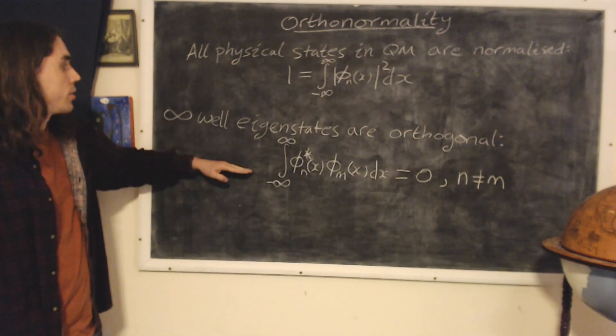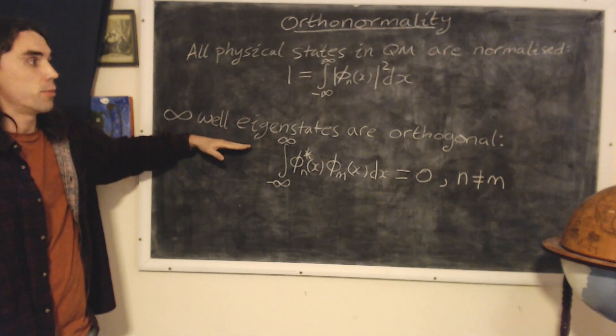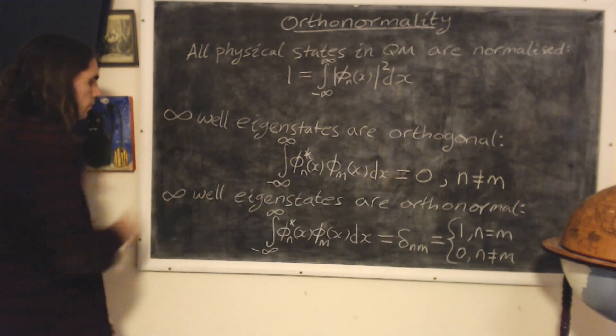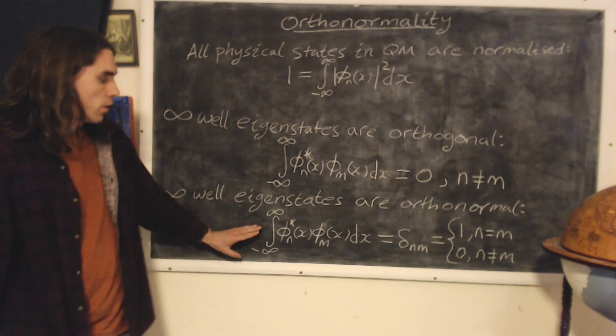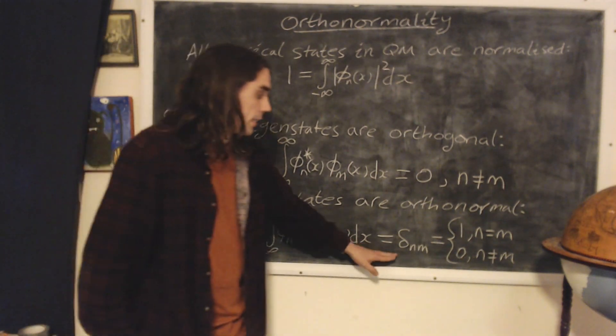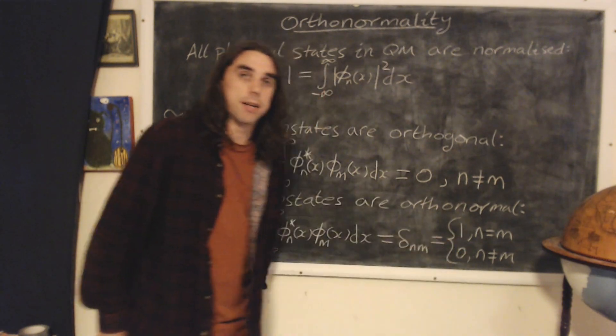Together, these two conditions tell us that the states are both normalized and orthogonal, and we call this orthonormal. So the statement is as follows: the integral of phi n star phi m over all of space is equal to the Kronecker delta, which is defined to be one if n equals m, and zero if n doesn't equal m.